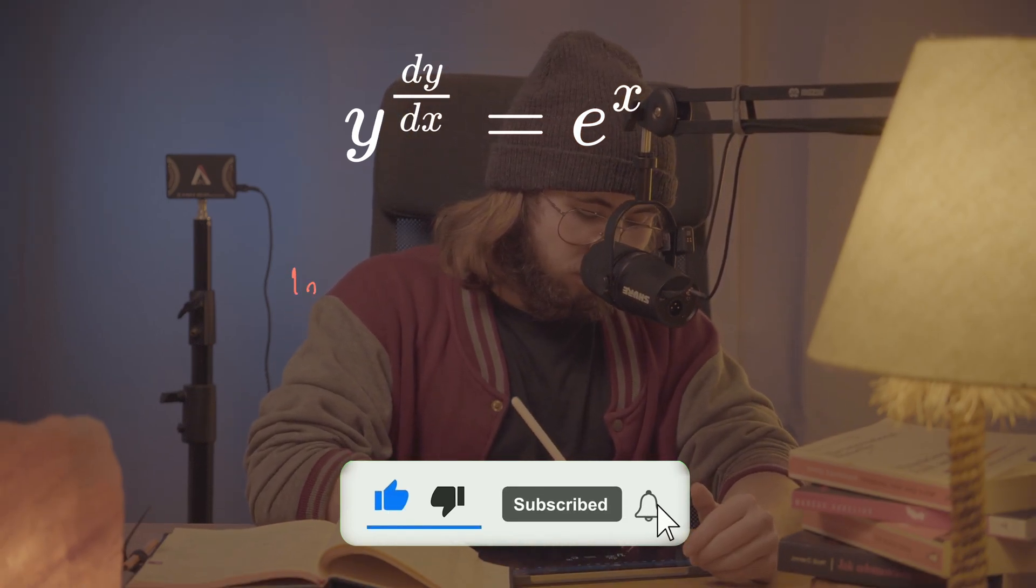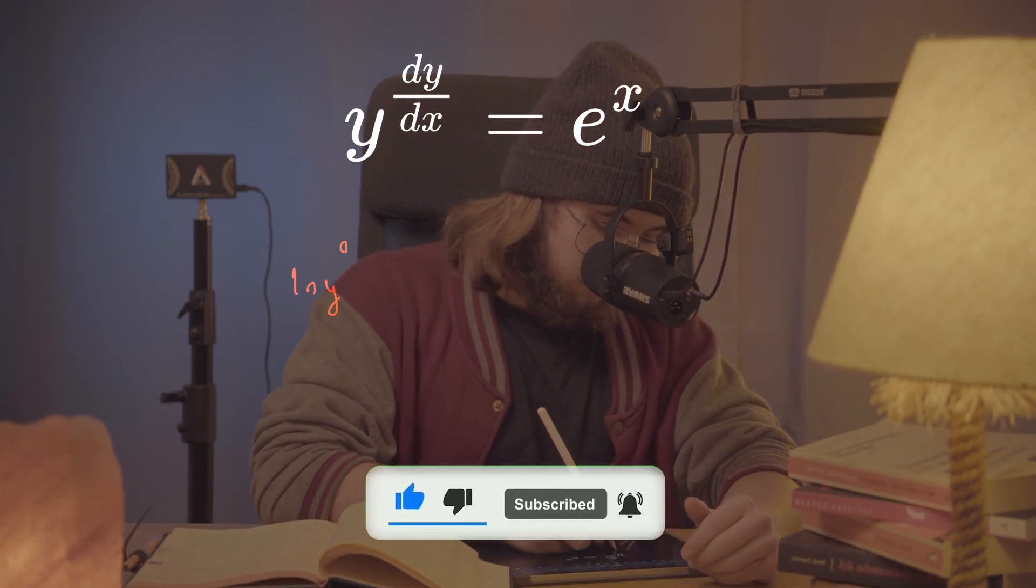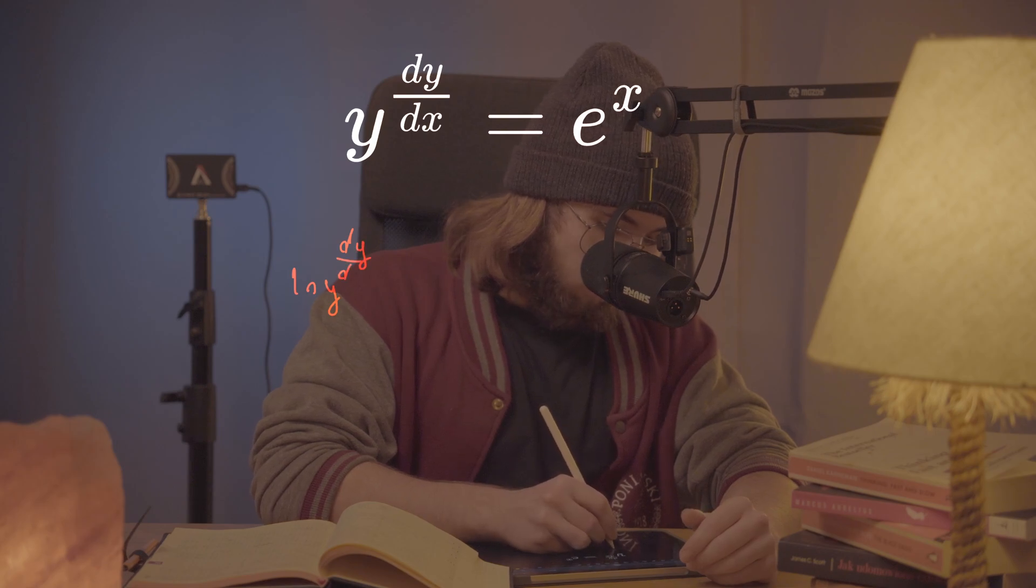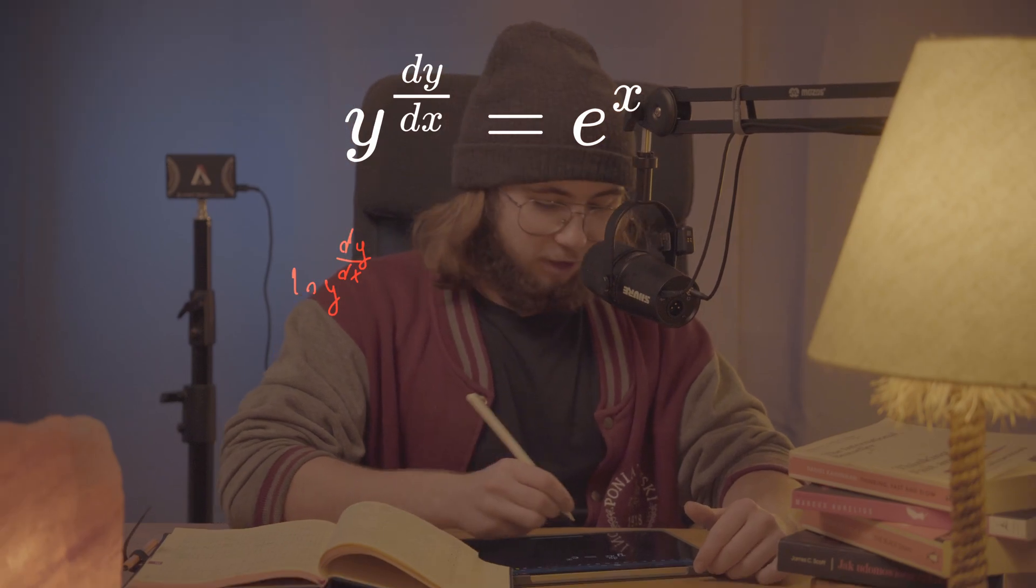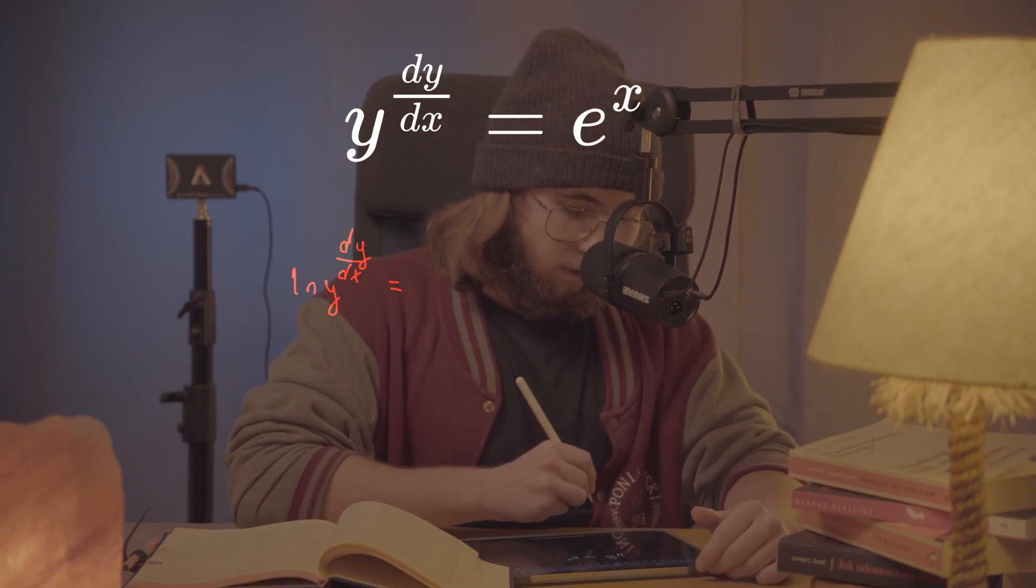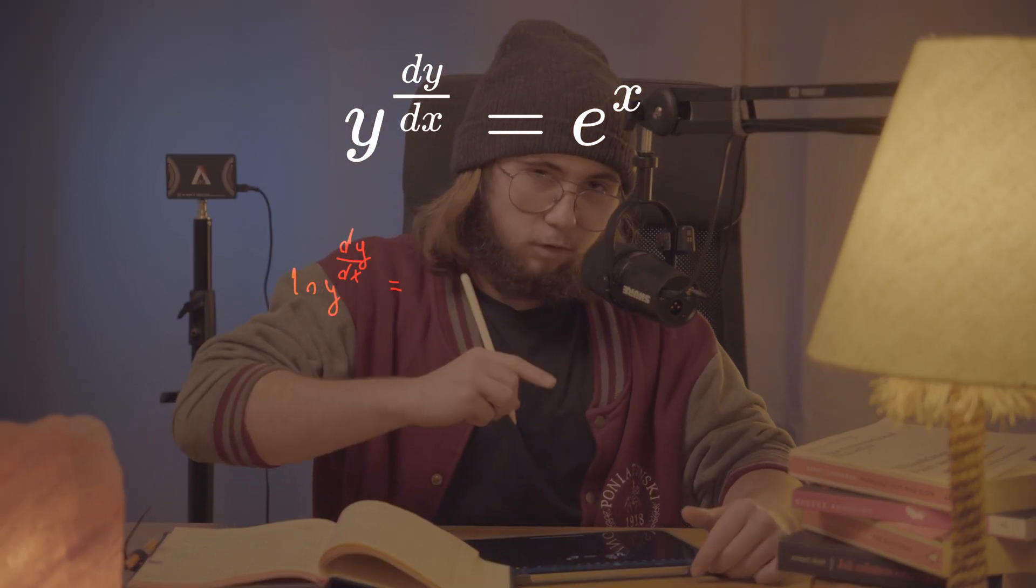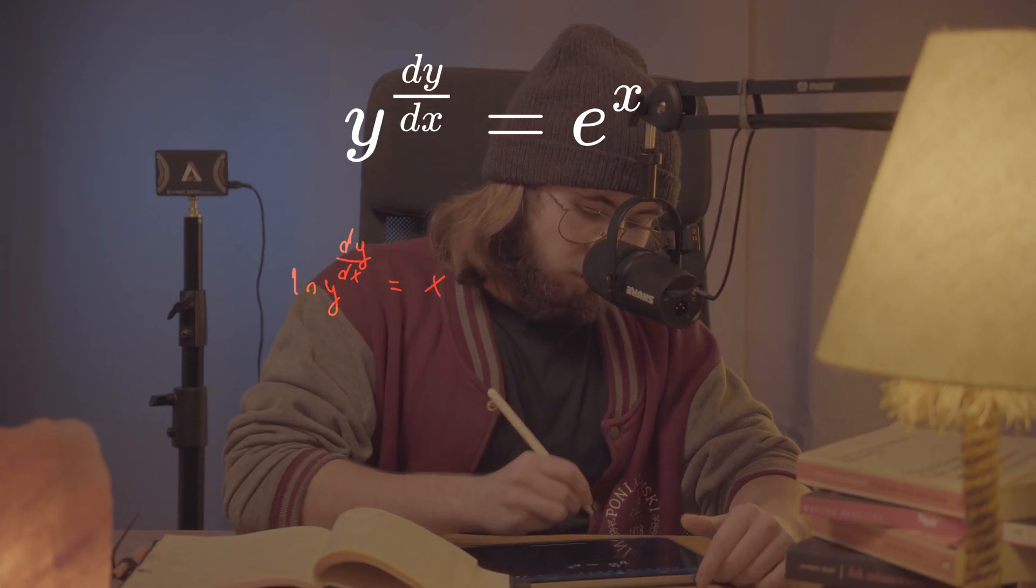First of all, I'd like to take the natural log of both sides of this equation in order to get the sense of what the hell's going on with this differential there. So the natural log of y^(dy/dx) and the natural log of e^x is just plain old x.